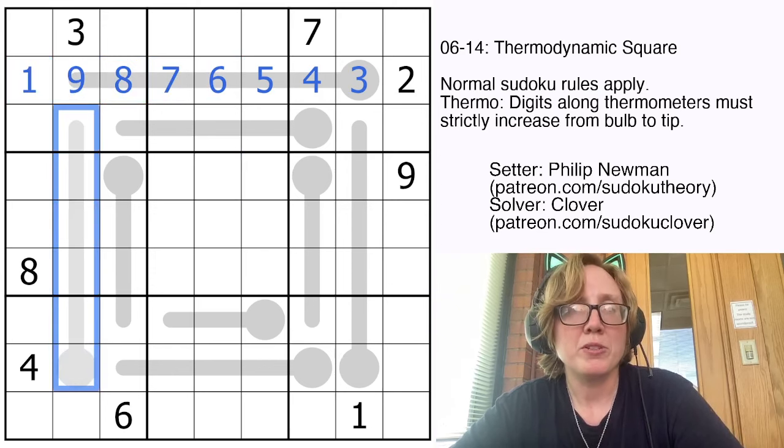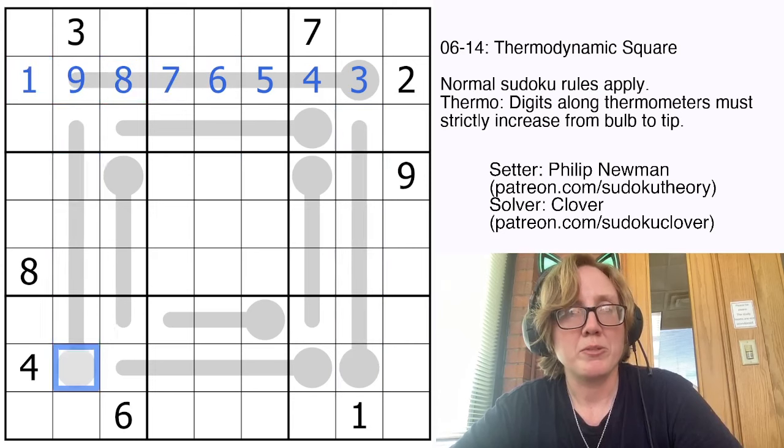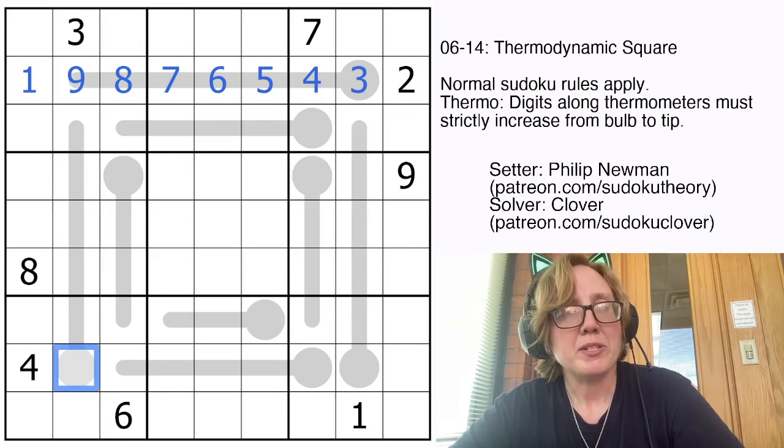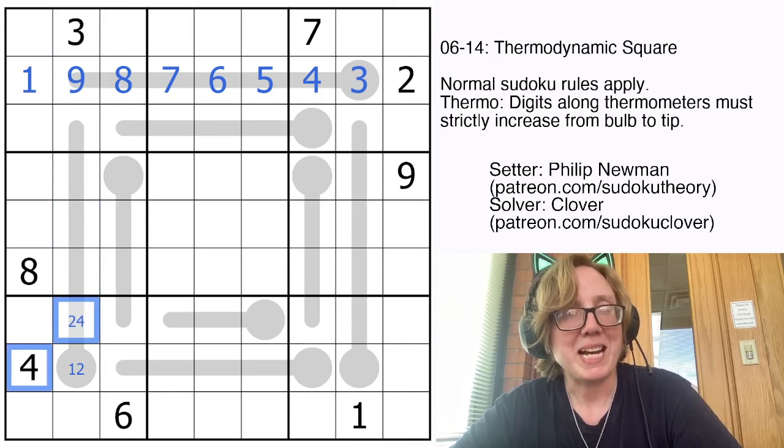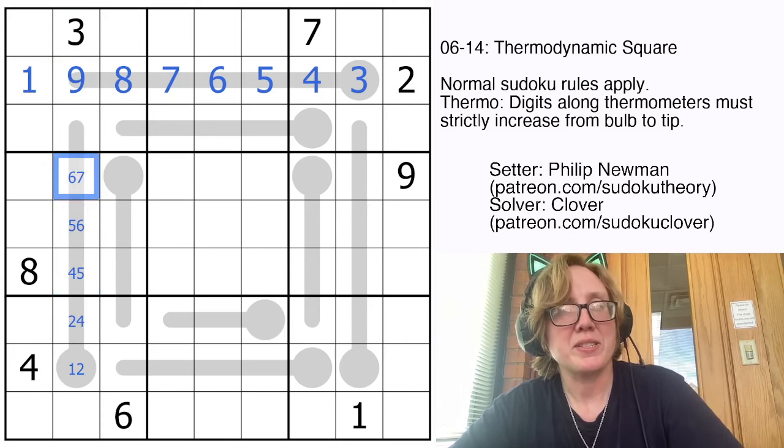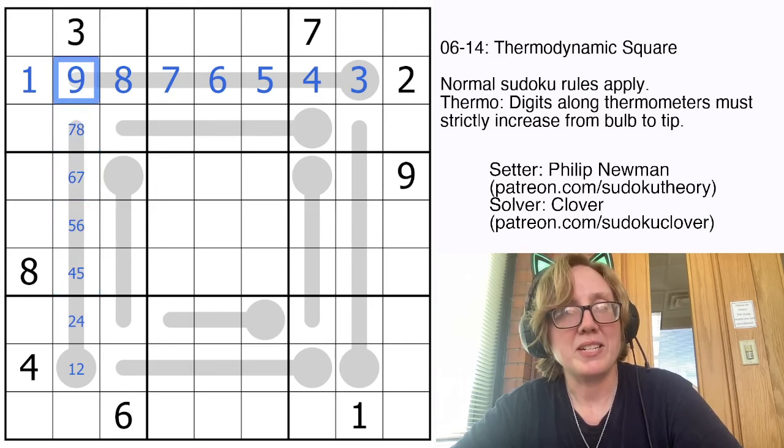That gives us only 1 degree of freedom on these two vertical thermos. This one, we have to start with either 1 or 2, then 2 or 4, then 4 or 5, 5 or 6, 6 or 7, 7 or 8, because there's a 9 already in the column. I knew there was exactly 1 degree of freedom because I had exactly one cell not on the thermo that hadn't been filled in yet.